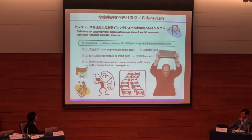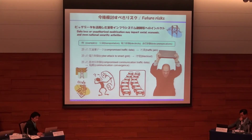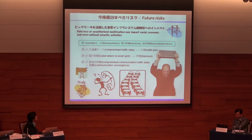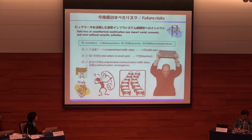Other than cloud computing, in the future, if big data are used for maintaining or controlling critical infrastructures, data loss — which relates to availability in information security — or unauthorized modification — which relates to integrity — may impact social, economic, and even national security activities. As the value of big data increases with wider usage, we need to recognize that these risks are also increasing. Critical infrastructure protection from cyber threats is one of the most important efforts by government agencies. With these environmental changes in mind, NISC is strengthening public-private partnerships, such as information sharing on cyber incidents and best practices.